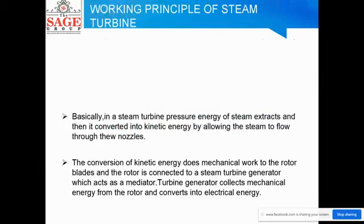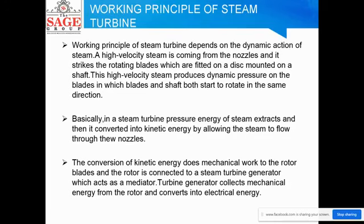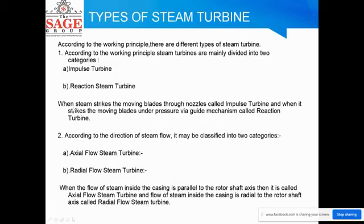Working principle: The working principle of a steam turbine depends on the dynamic action of steam. A high velocity steam jet comes from the nozzle and strikes the rotating blades fitted on a disc mounted on a shaft. The high velocity steam produces dynamic pressure on the blades, causing both blades and shaft to rotate. In a steam turbine, the pressure energy of steam is extracted and converted into kinetic energy by allowing the steam to flow through nozzles. This kinetic energy does mechanical work on the rotor blades, and the rotor is connected to the steam turbine generator, which collects mechanical energy and converts it into electrical energy.